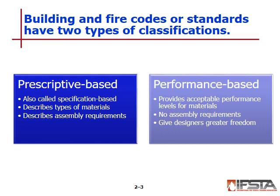Building and fire codes or standards may be classified as either prescriptive or performance-based. Prescriptive-based codes, also known as specification-based codes, describe the types of materials that can be used and how those materials must be assembled. Performance-based codes describe an acceptable level of performance that an assembly, material, or system must meet, and do not state how the item is assembled — giving the designer greater freedom.